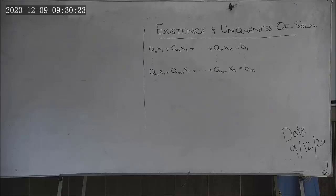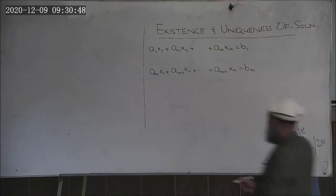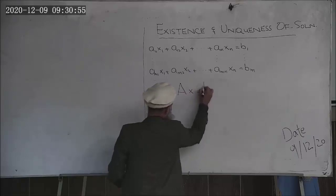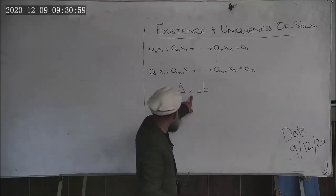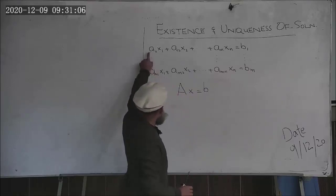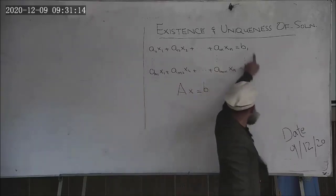Coming back to our discussion on systems of linear equations, when we started this discussion we had posed three questions. The first question is: does the solution exist? The second question is: is the solution unique? And the third question is: how to find the solution? This system of equations can also be written in matrix form Ax = b, where x is a vector of unknowns x1 up to xn, A is a matrix containing the coefficients of dimension m by n, and the right-hand side b contains these elements.